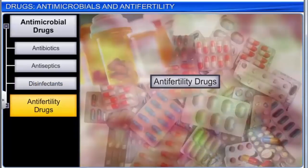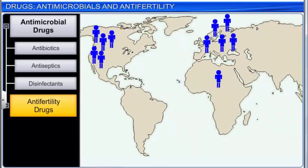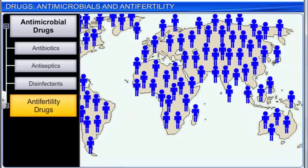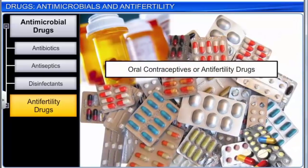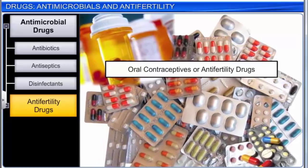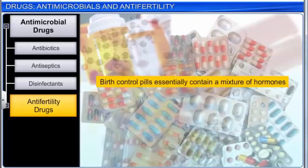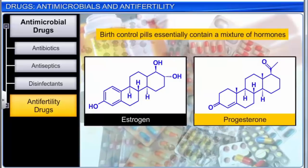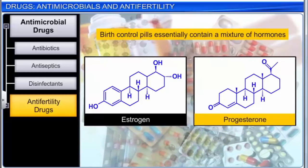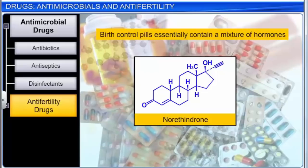Another important type of drug is anti-fertility drugs. With global population growing by the day, birth control has become essential. Oral contraceptives or anti-fertility drugs are used for birth control. Birth control pills essentially contain a mixture of hormones — namely synthetic estrogen and progesterone derivatives. Progesterone is known to suppress ovulation. Norethindrone is a synthetic progesterone derivative most widely used as an anti-fertility drug. Another drug, norgestrel or ethinyl estradiol, uses an estrogen derivative in combination with a progesterone derivative.